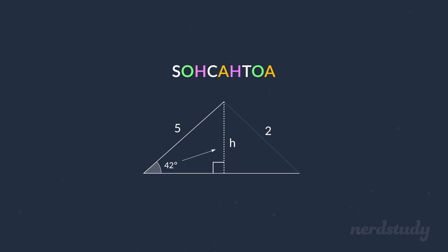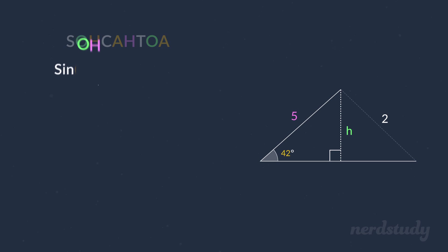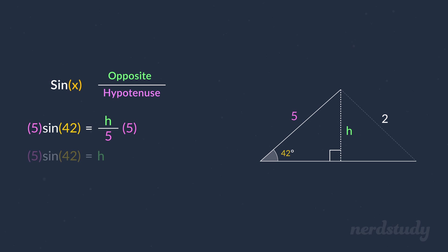So here we have the opposite side to the angle and the hypotenuse involved in this question, so we know we can use the sine function. So let's bring out the formula and start by plugging in our values. Multiplying both sides by 5 gives us this, so let's just rearrange this. Finally, if we compute this, we get a final value of h equals to roughly 3.35.